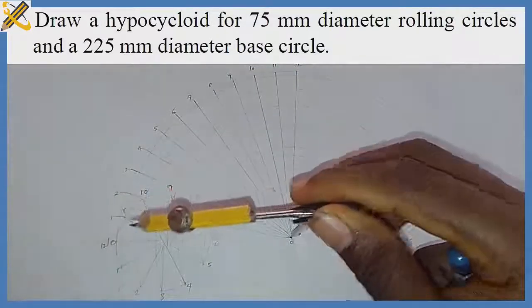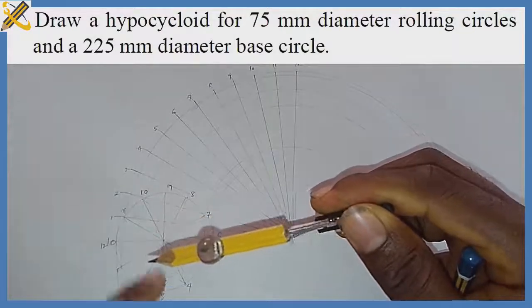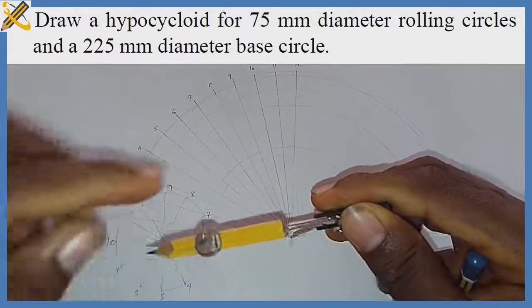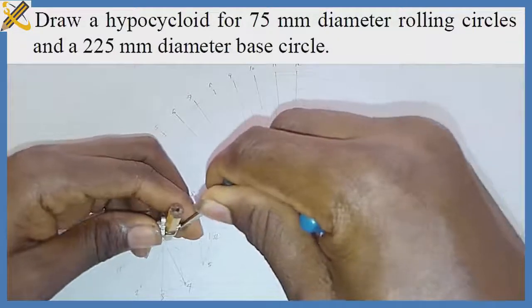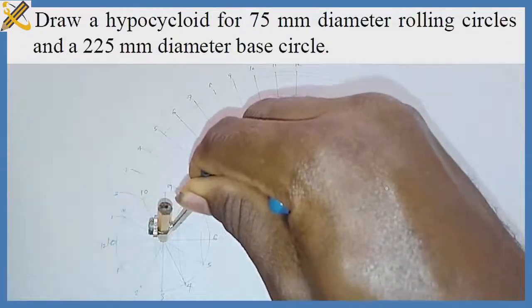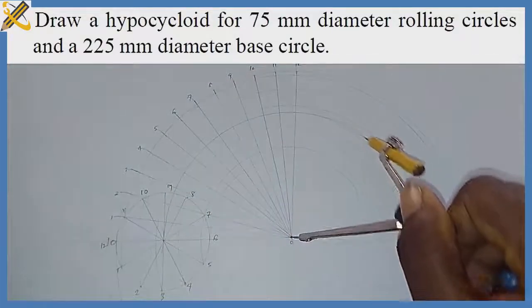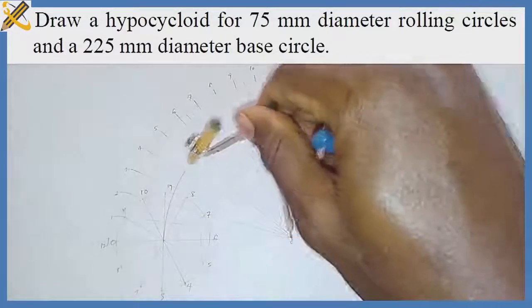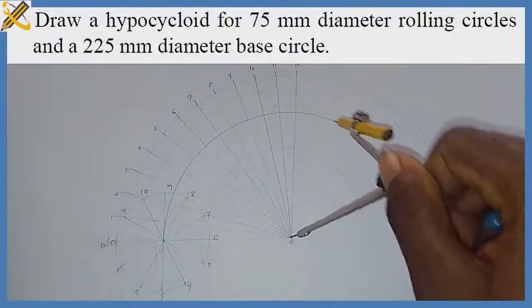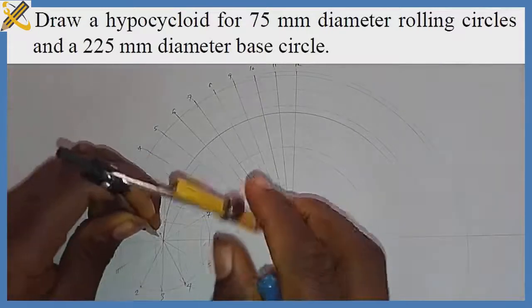Remember, this is not a cycloid, superior cycloid, or inferior cycloid. We need to get the midpoint from point O — we are going to produce the smaller circles from there. So extend your compass to the center of the small circle and produce another arc, making it a bit thicker to distinguish it from the rest.